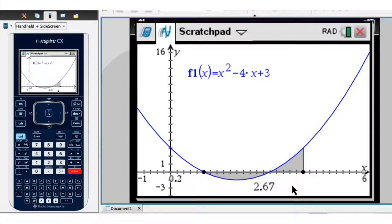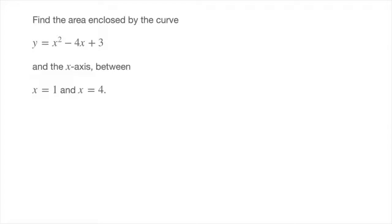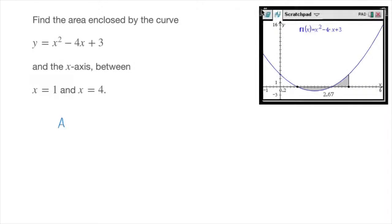We now know how to calculate the area enclosed by a curve and the x-axis using our TI Inspire CX. To finish this tutorial, let's quickly go back to the question paper to see how we should present our answer in an exam. In an exam, even though we may be allowed to use a calculator, we still need to present our answers properly. And here's how we would do that. We would state that the area is equal to the definite integral from 1 to 4 of the absolute value of our function. So that's x squared minus 4x plus 3.